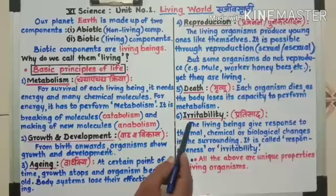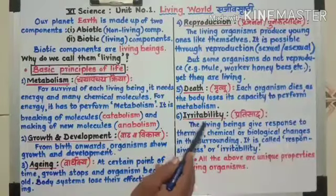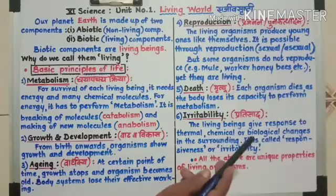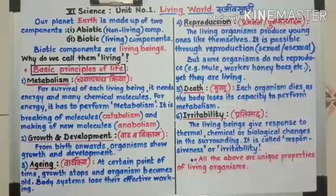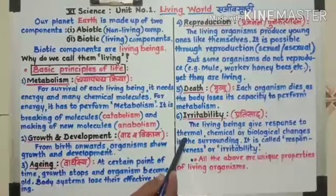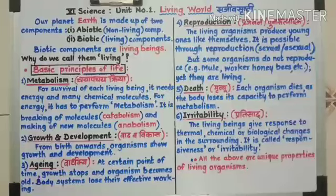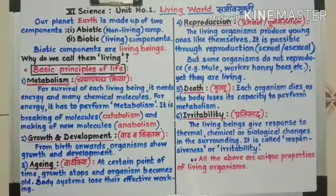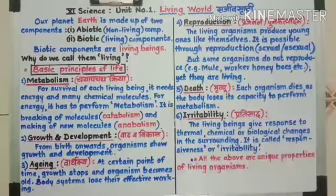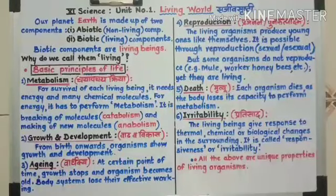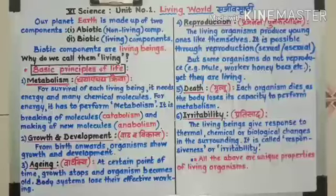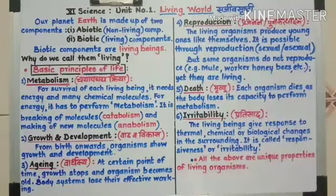The next principle is irritability. Irritability means the ability to give a response — Prathisad Dena. The living beings give response to thermal, chemical, or biological changes in the surrounding. This tendency to respond is called irritability or responsiveness.